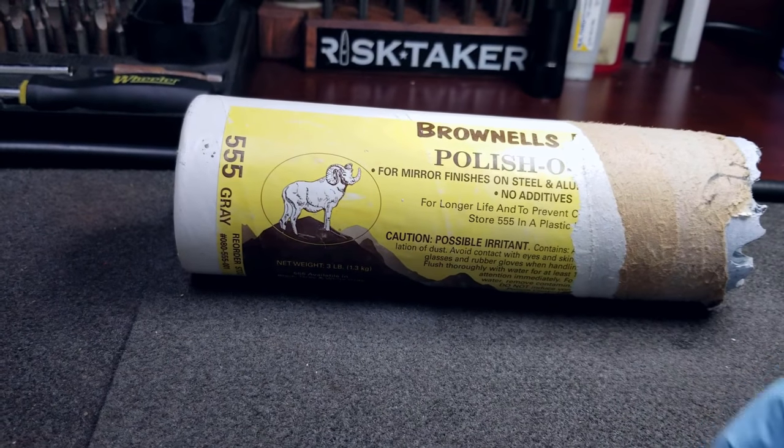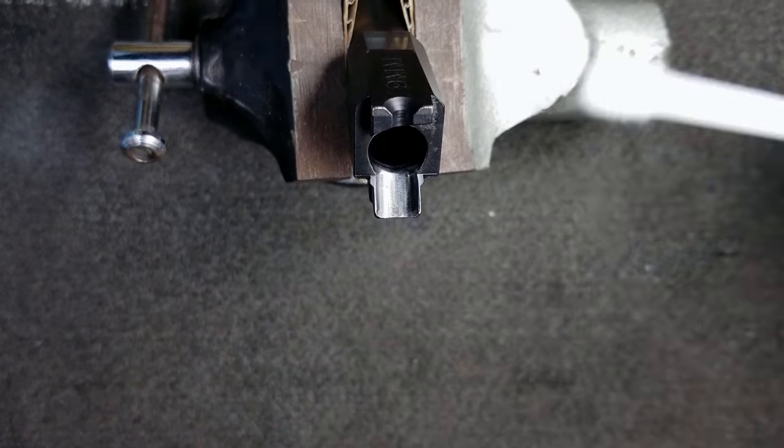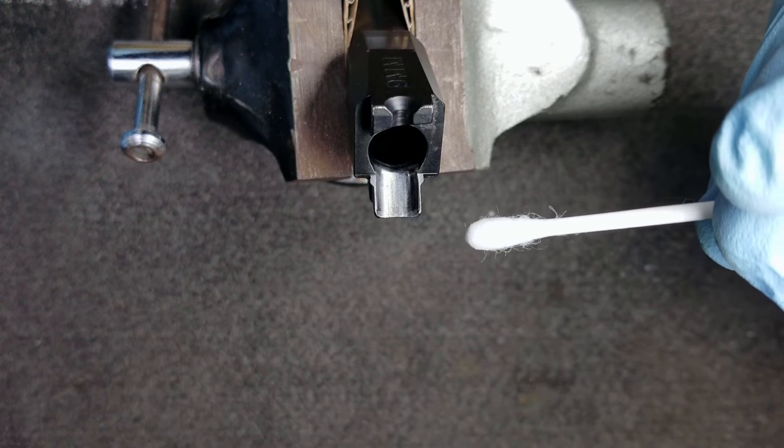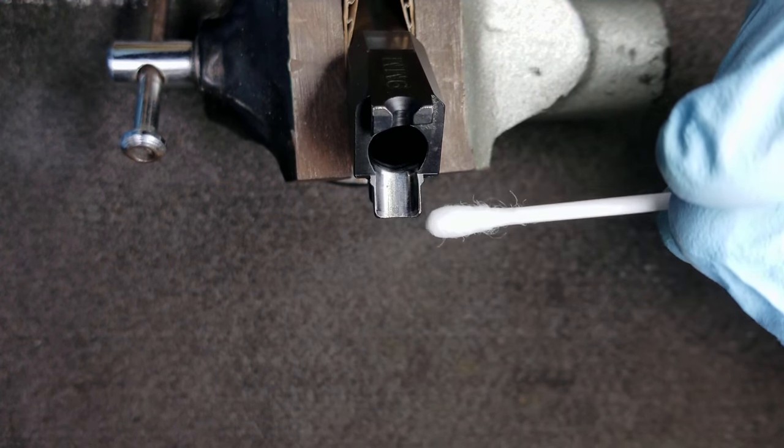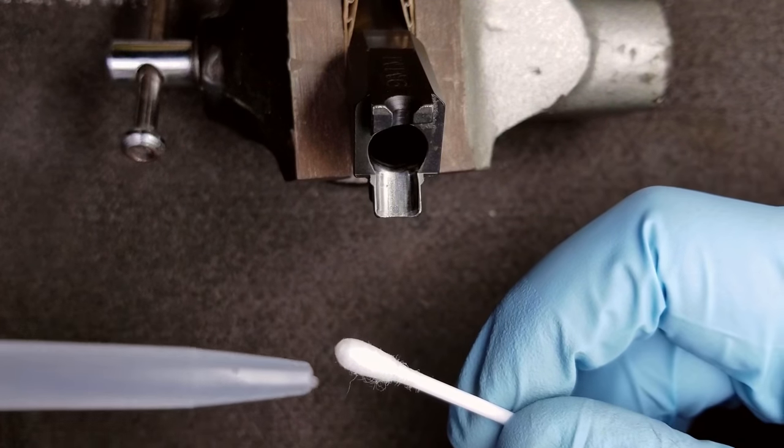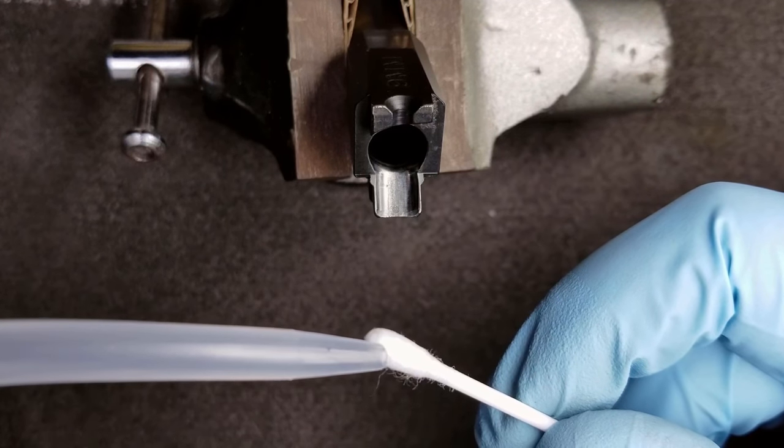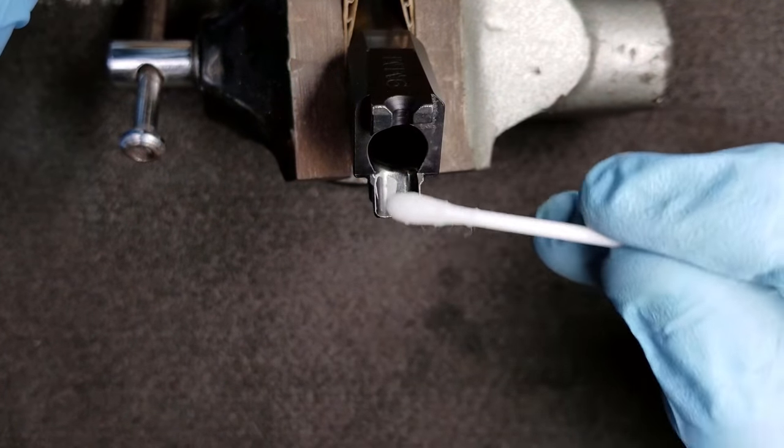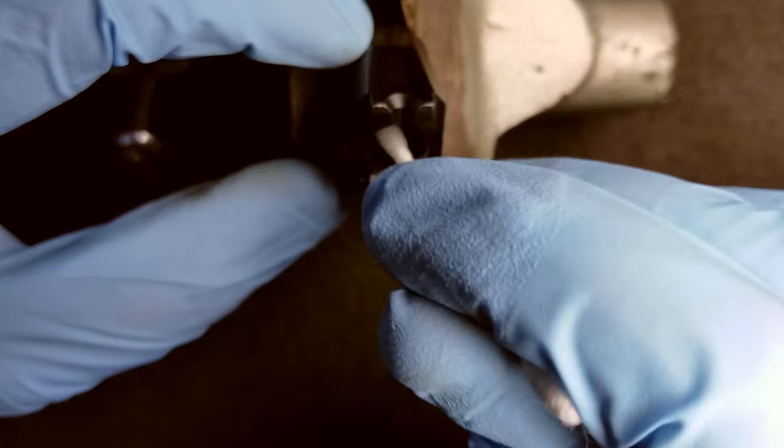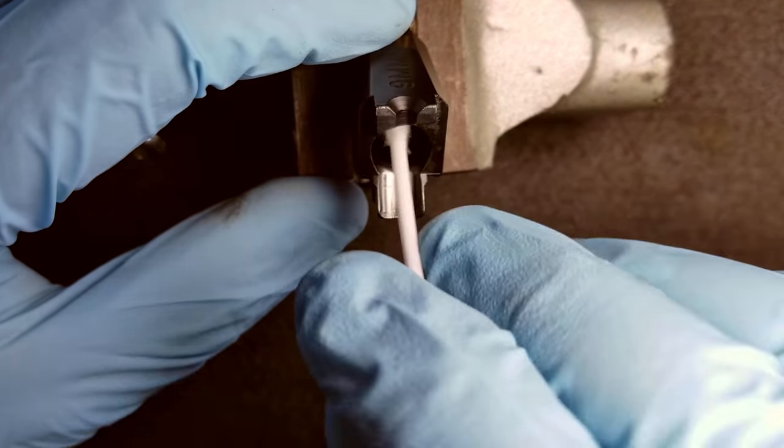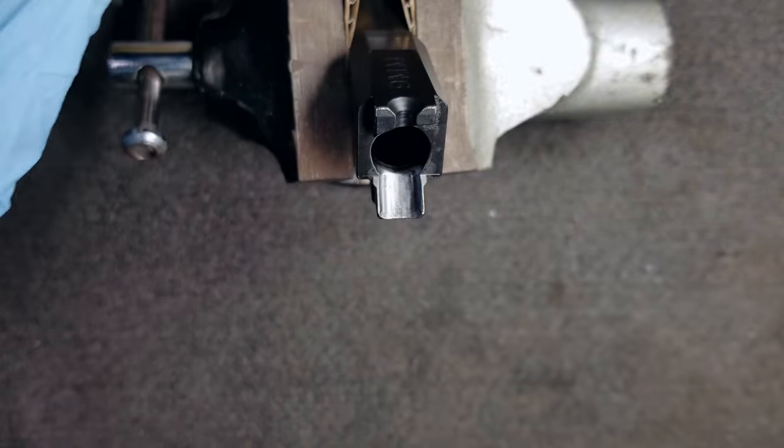The first thing we're going to do before we polish our feed ramp and chamber is degrease the surfaces we're going to polish in order to get rid of any residual oil that might be left behind, so it can yield the best results when we start polishing. To do this we're going to get a Q-tip and a little bit of acetone. We're just going to wipe the surface clean, wipe all the areas that you plan on polishing, and then use the dry side just to soak up whatever is left behind. Now we can start polishing.